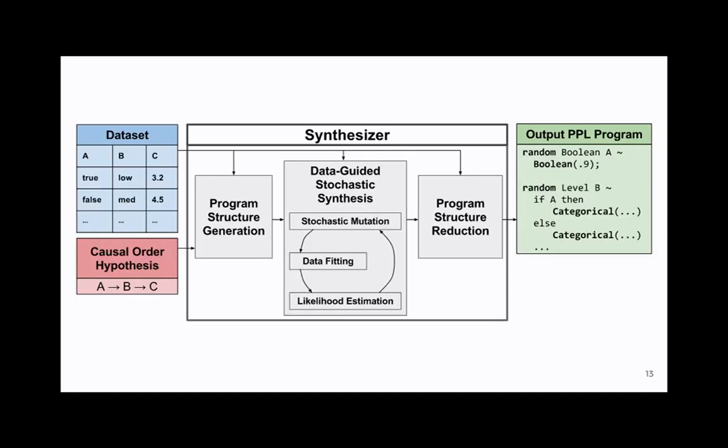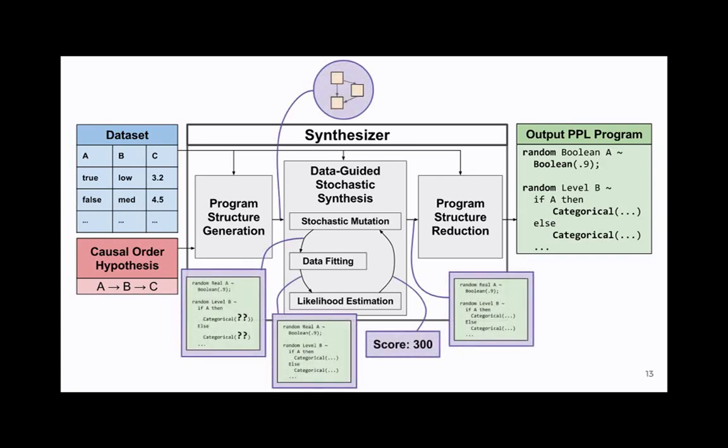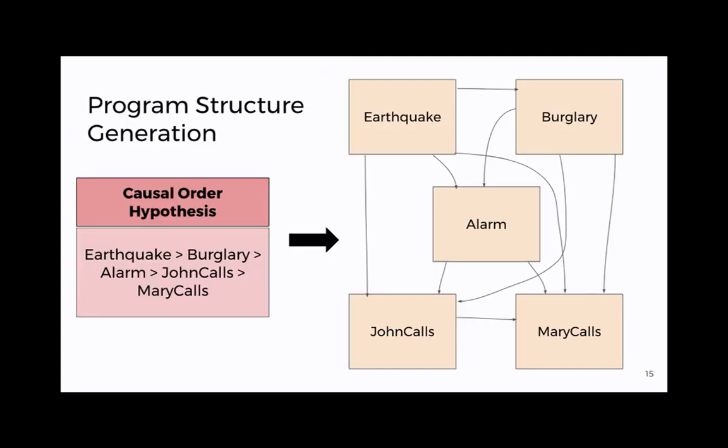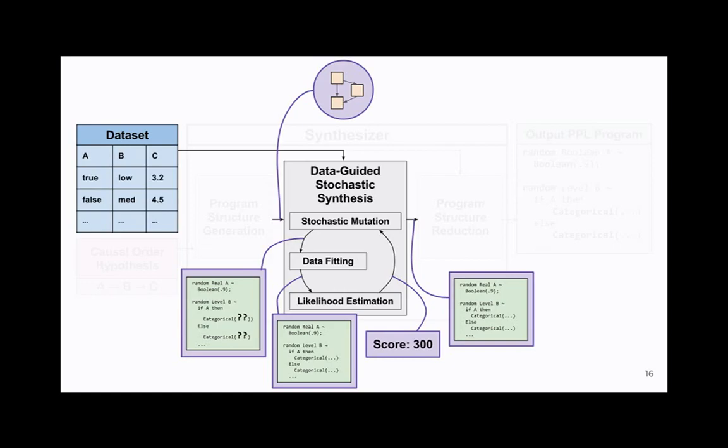All right. Let's get on to the tool. Basically, we're breaking the synthesizer down into three stages. First is actually going to generate those topologies that you just saw. Once we've got that, we'll do some stochastic synthesis, get to a full program that has a good score. Once we have one that has a good score, we'll pass it on to the program structure reducer that will hopefully give us a smaller version of that same program that eliminates some of those unnecessary connections. We'll take these one at a time. Starting with program structure generation, this is quite straightforward. We get that causal order hypothesis. From that, we're just going to take the transitive closure, get a topology.